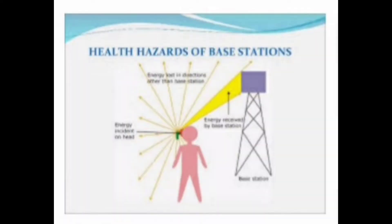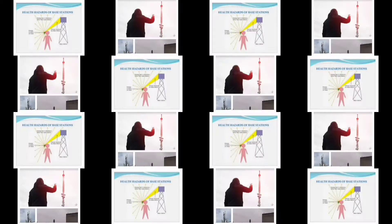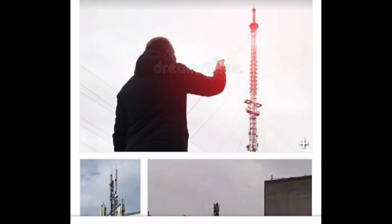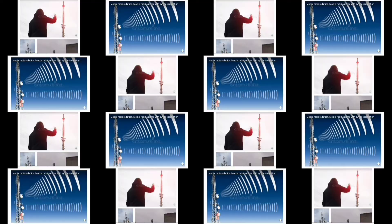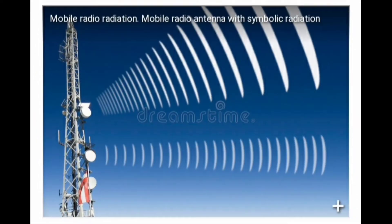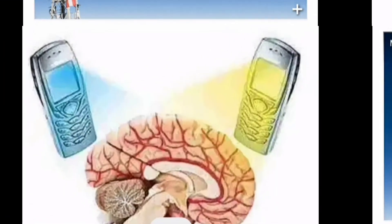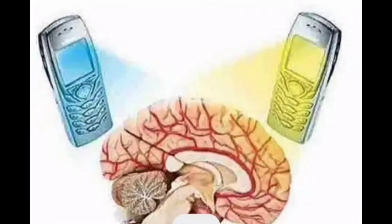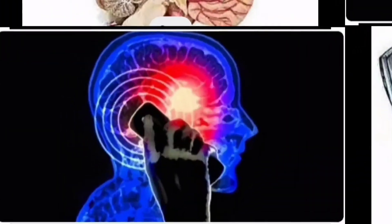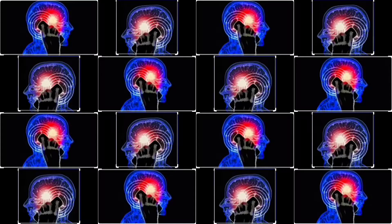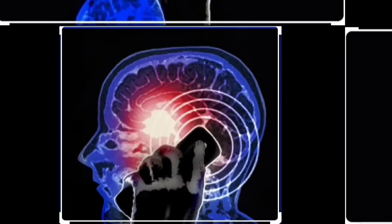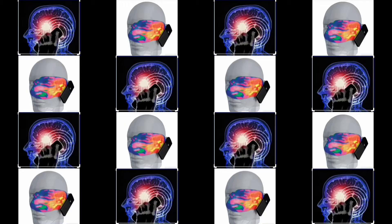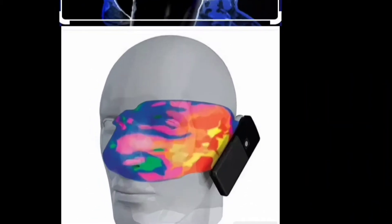Hello friends, you all are welcome in my channel. Today's topic is mobile radiation. The type of radiation emitted from mobile phones is electromagnetic radiation, which is present in mobiles because they use radio frequency waves to make and receive calls.